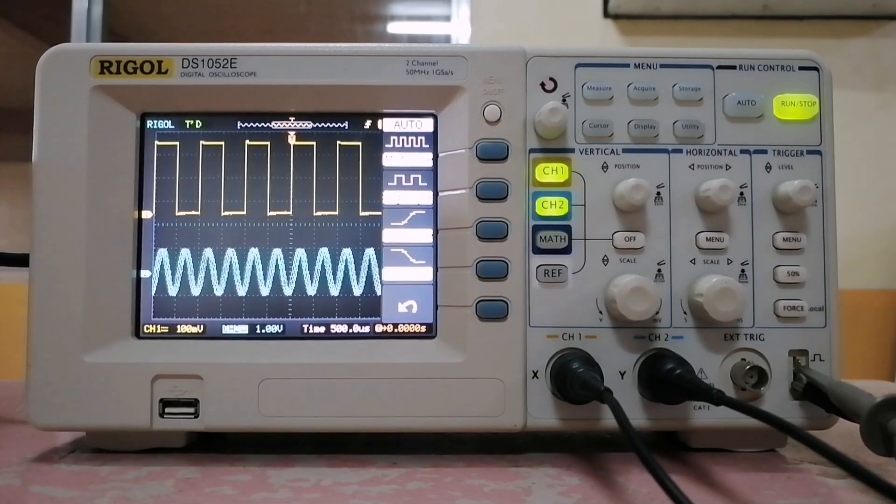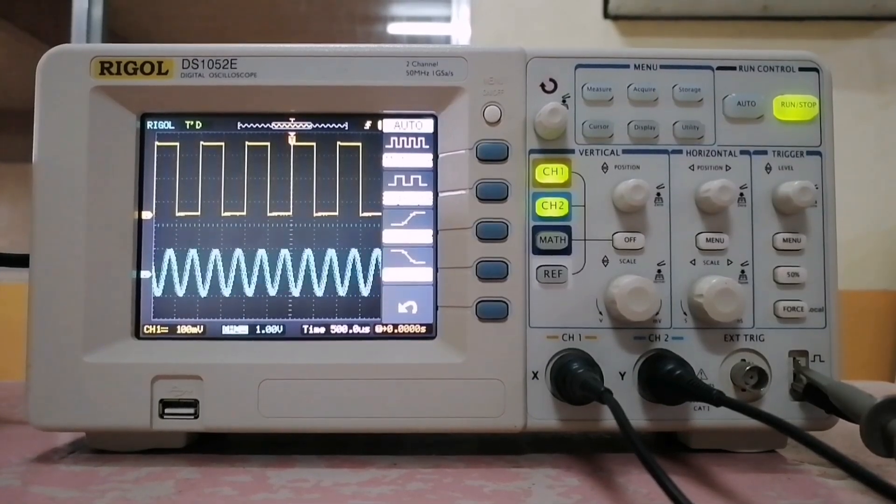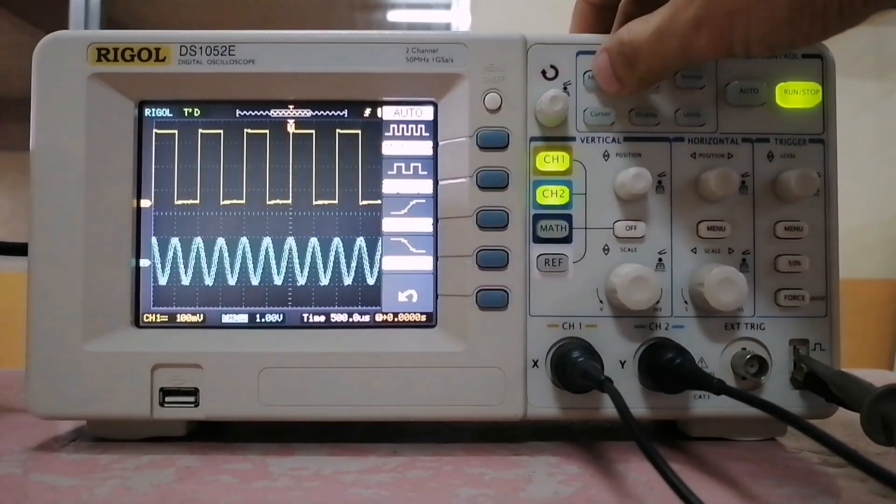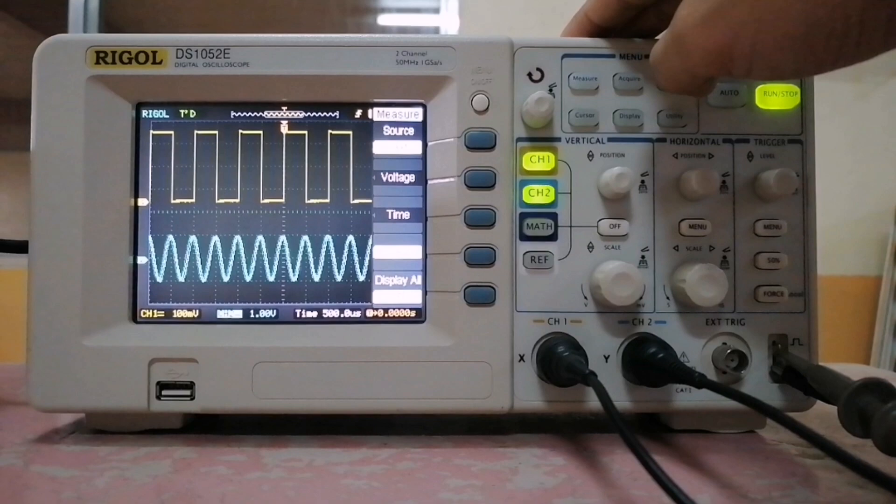The yellow waves are from channel 1 which is indicated here, and the blue sine wave is from channel 2. To display useful data, click the measure button. This will bring up the side menu.